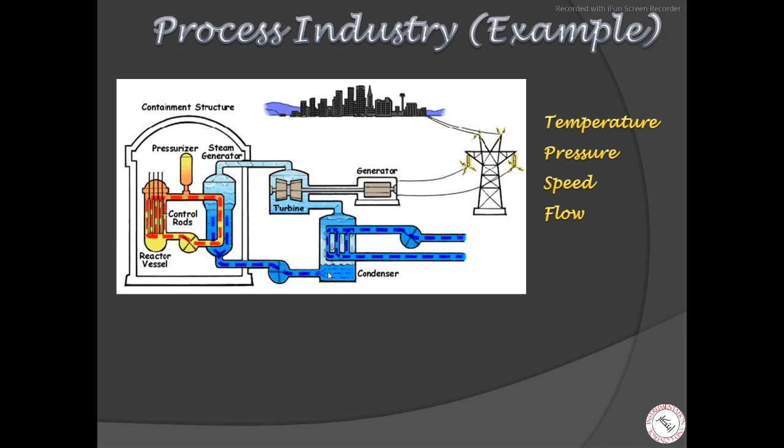The level of the condensed water in the condenser must be maintained such that the pump can safely pump it back into the steam generator. An electricity generator is coupled with this turbine.